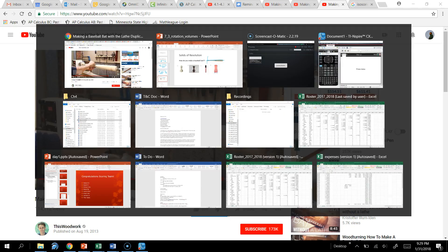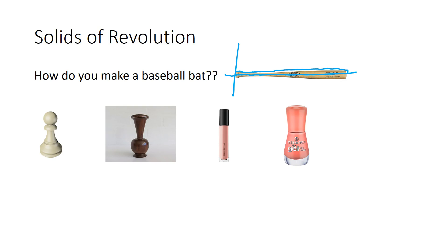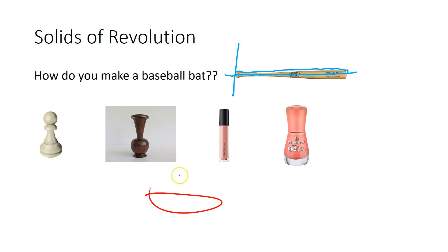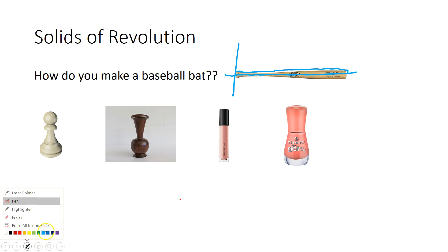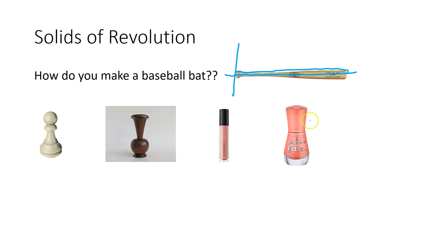That's how they make a baseball bat — kind of cool. Volumes of revolution are everywhere in everyday life. Basically, anything where you can imagine taking a shape and revolving it around an axis — if you cut it at any point you'd see a circle. A chess pawn, a vase, pottery at a spinning wheel, makeup cases — anything from simple cylinders to more complicated shapes. As long as you can imagine a shape being revolved around an axis to create a volume, that's what we mean by a volume of revolution.